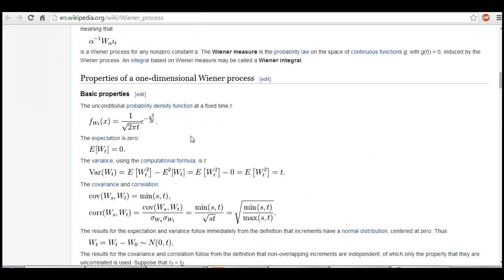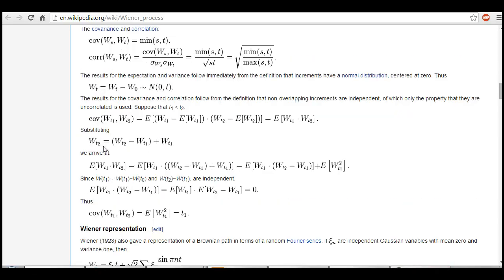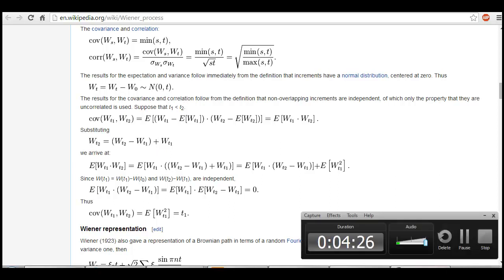We can look at what W_T is. W_T has expected value zero, and we're looking at the differences. W_T2 minus W_T1, and W_T minus W_T0 is normally distributed with mean zero and variance T.